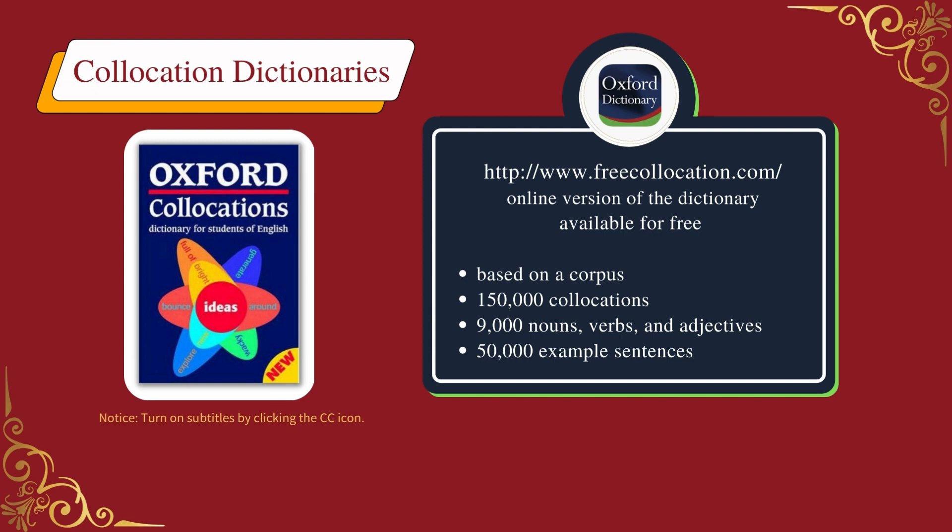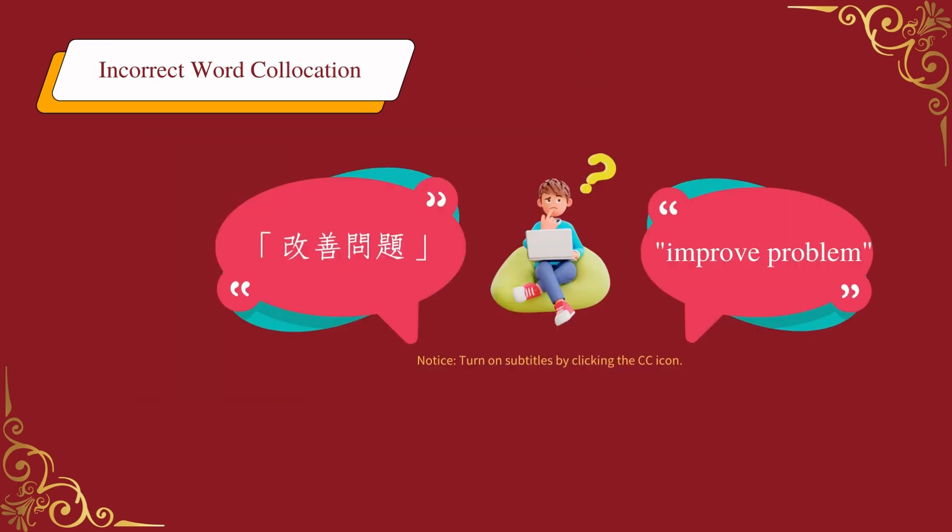is the online version of the Oxford Collocations Dictionary for Students of English, which is available for free. This dictionary is based on a corpus and includes 150,000 collocations for 9,000 nouns, verbs, and adjectives, as well as over 50,000 example sentences.